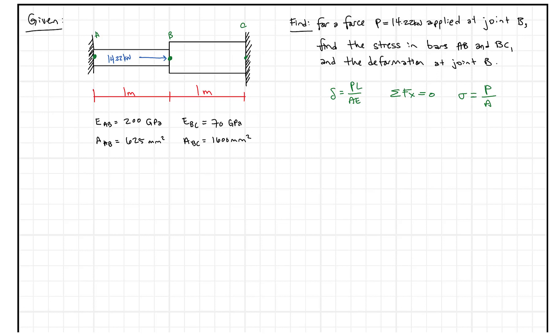And what we want to do is we're given the force P equals 14.22 kilonewtons in this case. So there's a sister video to this with a similar question, but in that question we're given deformation and we want to solve for P. In this one, we're given P and want to solve for the stress in the bars AB, BC, and also the deformation at joint B.